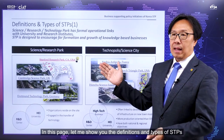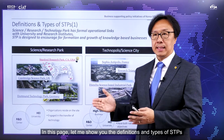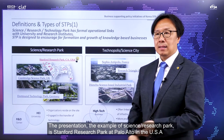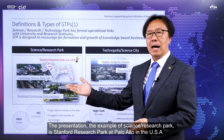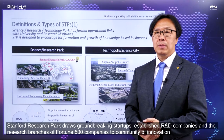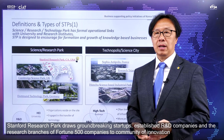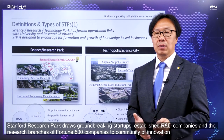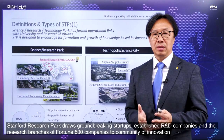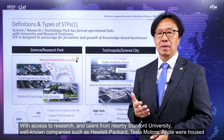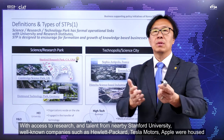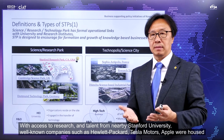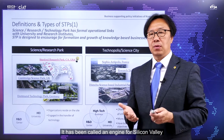Let me show you the definition of types of STPs. One prominent example of a science research park is Stanford Research Park at Palo Alto in the USA. Stanford Research Park draws ground-breaking startups, established R&D companies, and the research branches of Fortune 500 companies to a community of innovation, with access to research and talent from nearby Stanford University. Well-known companies such as Hewlett-Packard, Tesla Motors, and Apple were housed there. It has been called an engine for Silicon Valley.